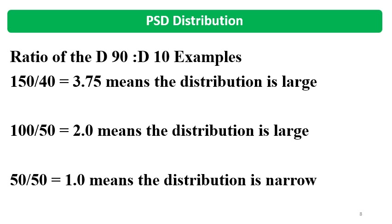Now we will see the PSD distribution width. You can consider the distribution width by the ratio of D90 to D10. If this ratio value is large — above 1 — then the distribution is wide. If it is coming towards 1, the distribution is narrow, meaning the difference between D10 and D90 is small. If it is wider, the difference between D90 and D10 is more; if narrower, the difference is less.